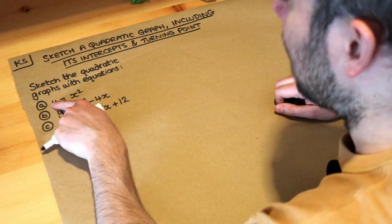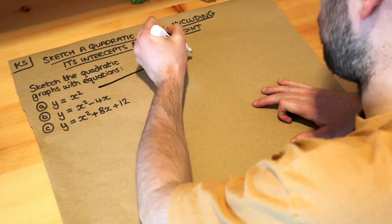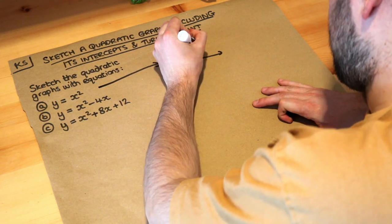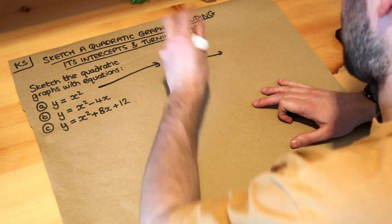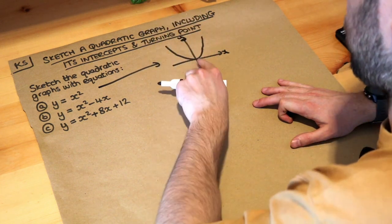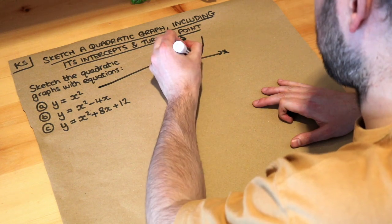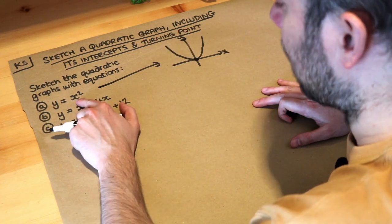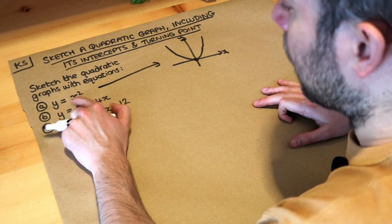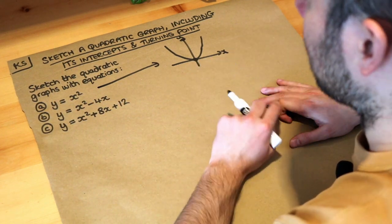Now this first graph, when you have y equals x squared, I would just memorise this one. It looks like a u-shape that goes through the origin, the point zero zero. We know it goes through zero zero because if x equals zero then the y value would be zero squared, which is zero.